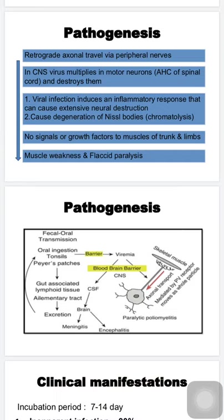Complete weakness in the muscles of the trunk and limbs results in flaccid paralysis. Looking at the pathogenesis diagram: the feco-oral route leads to multiplication in the tonsils and Peyer's patches, then viremia, then either crossing the blood-brain barrier to cause meningitis or encephalitis, or reaching skeletal muscle interstitial tissue, invading peripheral nerves, and making retrograde axonal travel to the CNS via the receptor CD-155.